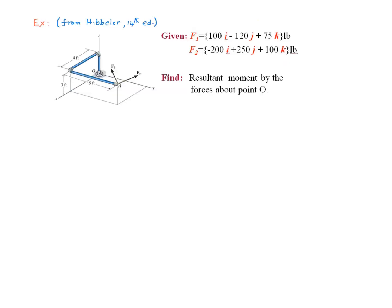Let's do this example. We have two forces, F₁ and F₂, given in component form by these equations, acting at point A. We want to find the resultant moment by the forces about point O. Since this is a true three-dimensional problem, we'll use the vector method.